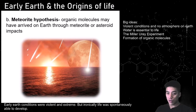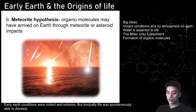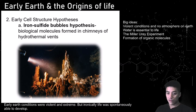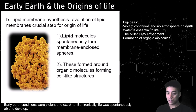Another idea is the meteorite hypothesis — the idea that meteorites and asteroids came crashing into Earth, carrying life or organic molecules like proteins from some outer world. There's also the early cell structure hypothesis: iron sulfide released by hydrothermal vents can help support cell structure. Iron sulfide is a chemical found in cells, and so even in extreme conditions with no sunlight or oxygen, life was still able to form.